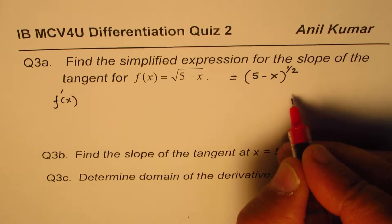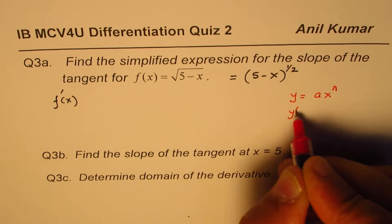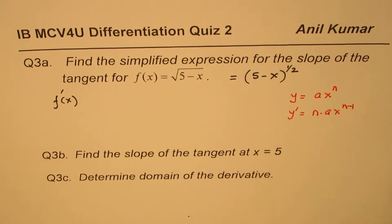So the power rule, as you know, is if y equals a times x to the power of n, then the derivative is n times a times x to the power of n minus 1. So that's the rule which we are going to apply.